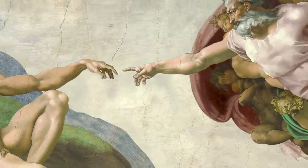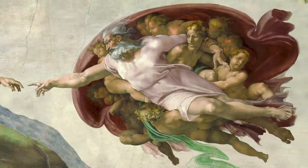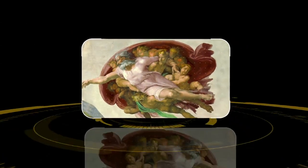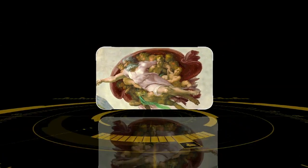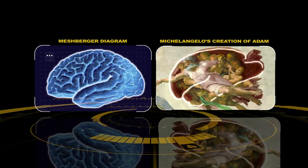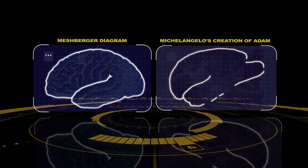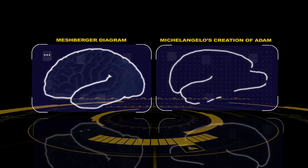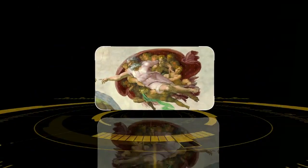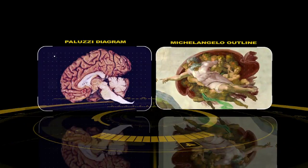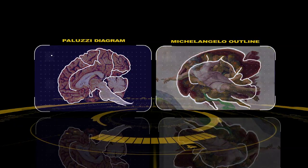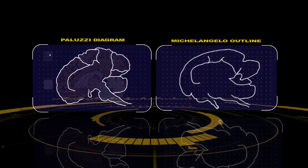He made a pretty obvious observation that when you look at the figure of God in that painting, you're looking at a sagittal cross-section of the brain. Meshburger's paper demonstrates a direct correlation in both the external form and the sagittal view of the human brain. The compositional elements correspond to specific structures and features of the human brain.